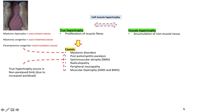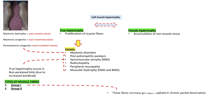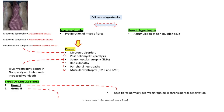There are two types of muscle fibers: Group 1 and Group 2. Group 1 muscle fibers hypertrophy in response to chronic partial denervation, whereas Group 2 fibers hypertrophy in response to increased workload.